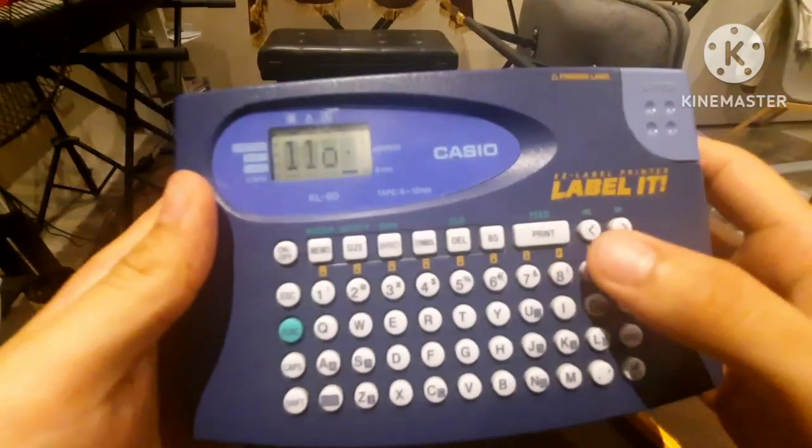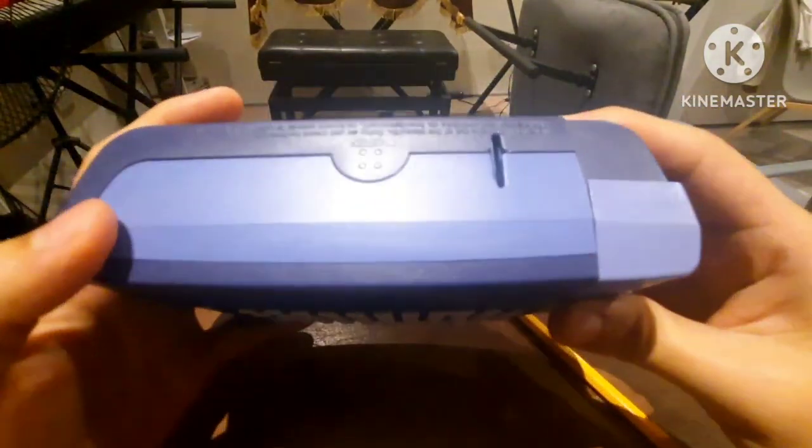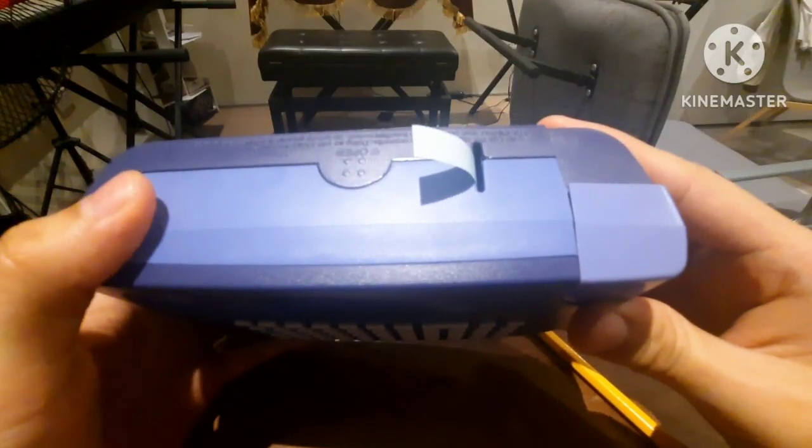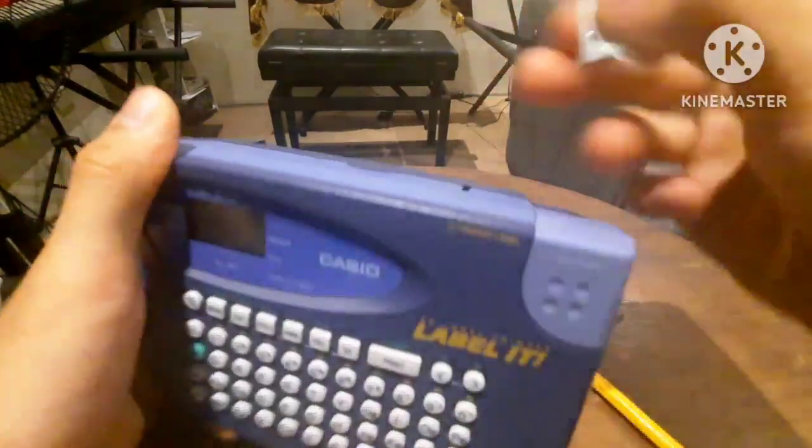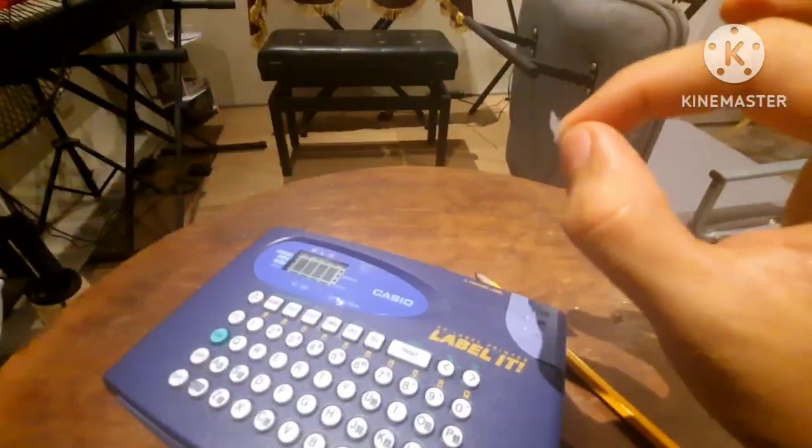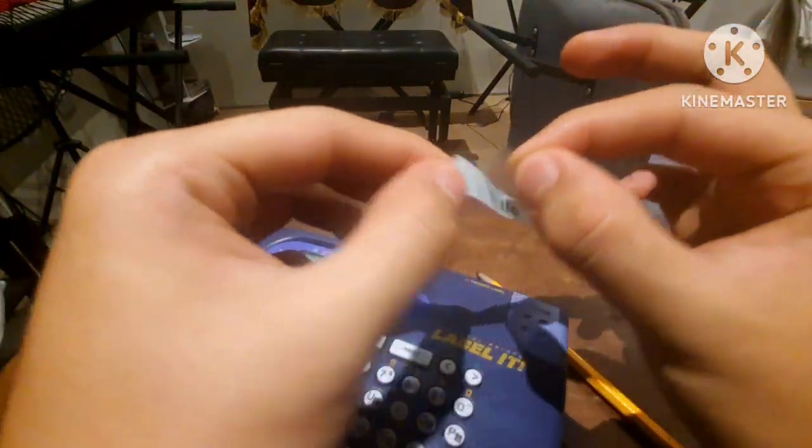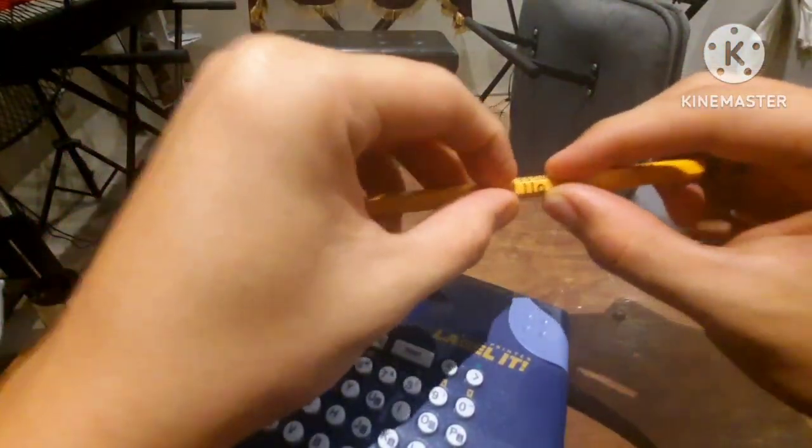Now say you want to print this, effortlessly press the print button and watch as it comes through the slot. Press the cutter button and take it out. There you have your very simple tag. Effortlessly peel the backing off and paste it to your object of desire. Now everyone will know who owns which.